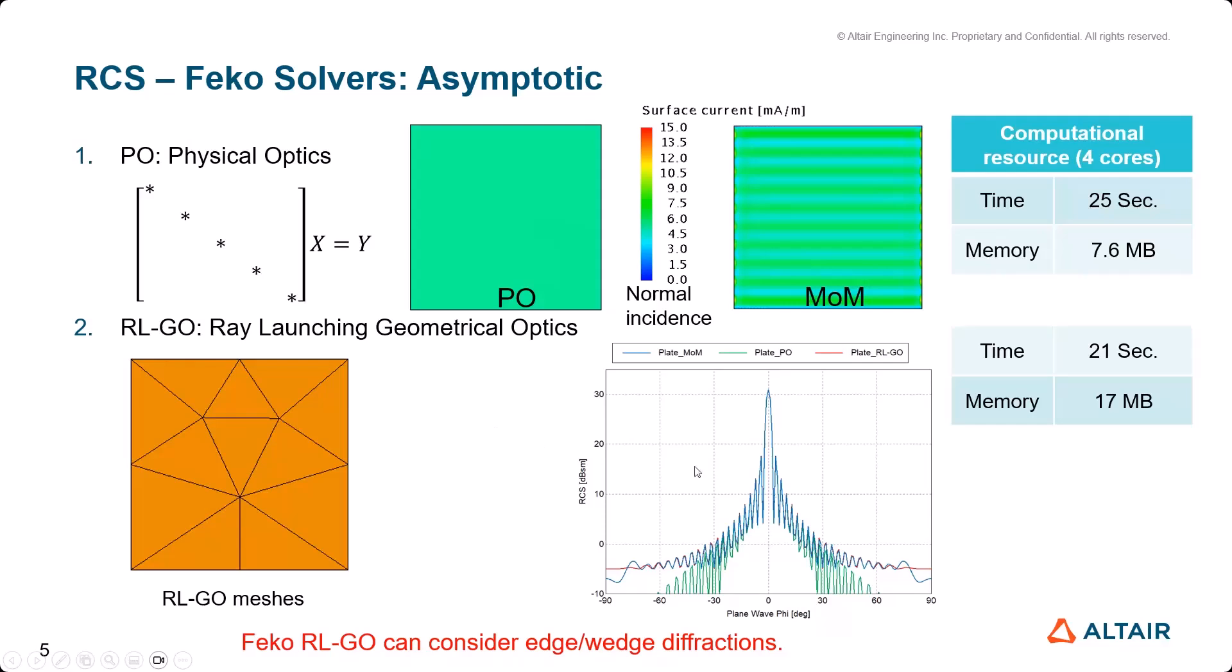But as you can see in this graph, RL-GO gives good RCS calculation values.